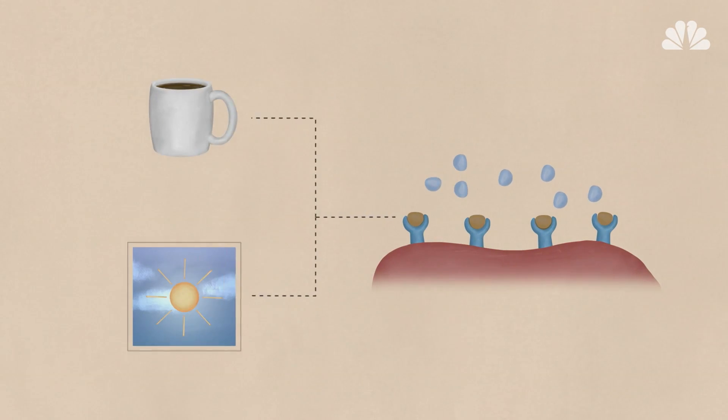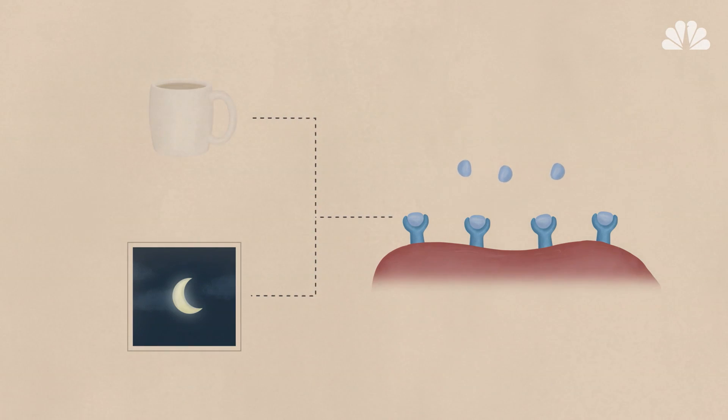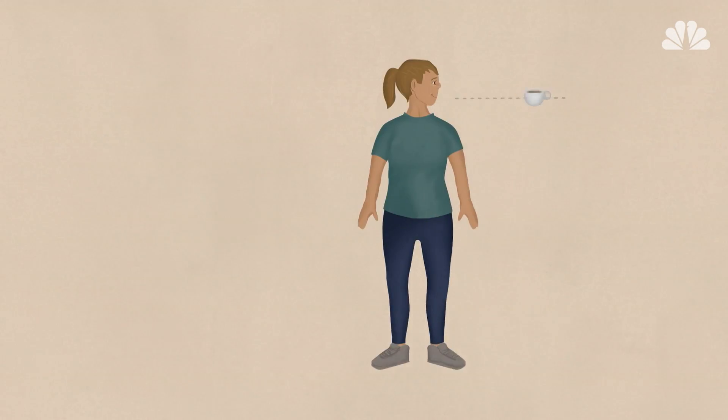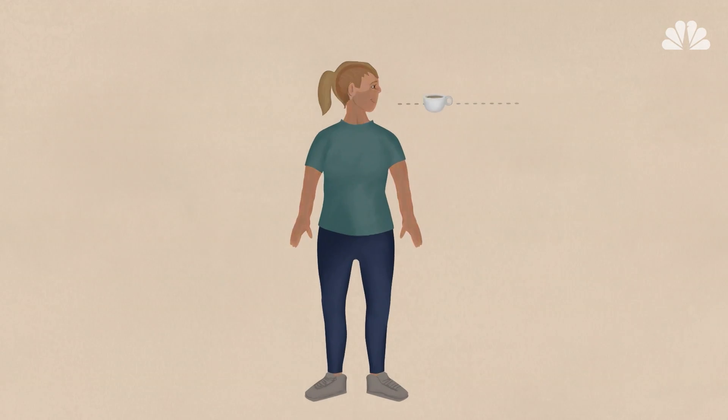But after about six hours, the caffeine starts to wear off, and adenosine begins to take its place. So you find yourself reaching for another cup amid an afternoon slump. And when you keep filling that coffee mug daily, the caffeine begins to change your brain.